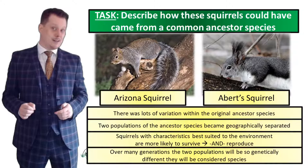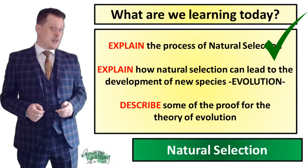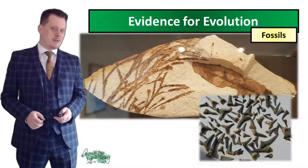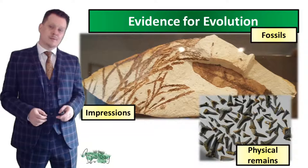So now we can explain the theory of evolution in terms of natural selection. Next we're going to have a look at some of the evidence for the theory of evolution. Our biggest chunk of evidence are fossils, which can take on many forms, including impressions in softer sedimentary rocks and actual physical remains — most often teeth and bones.